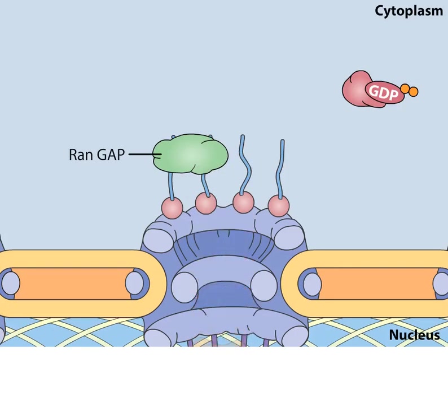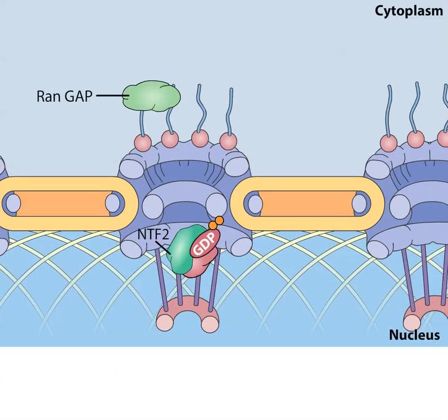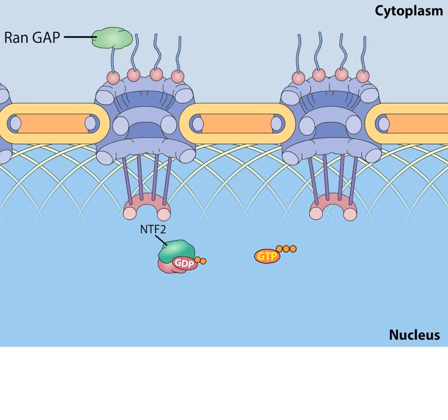In an action that prevents the depletion of RAN from the nucleus, the RAN-GDP formed in the cytoplasm is transported back to the nucleus by its own import receptor, a protein called NTF2.